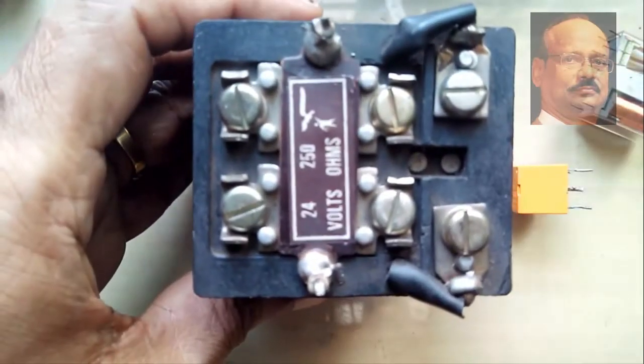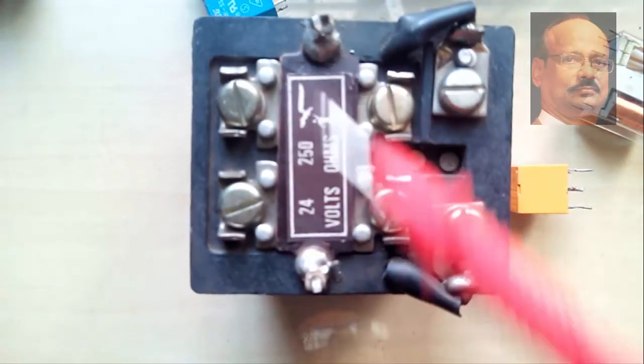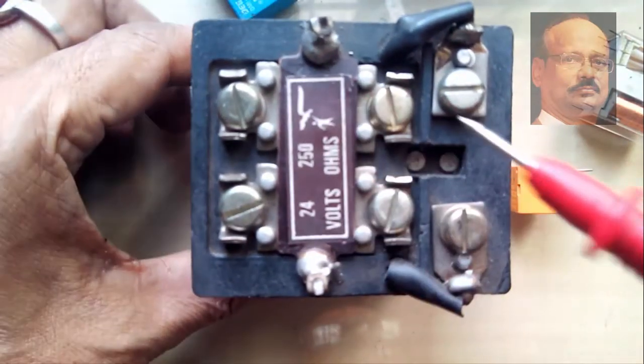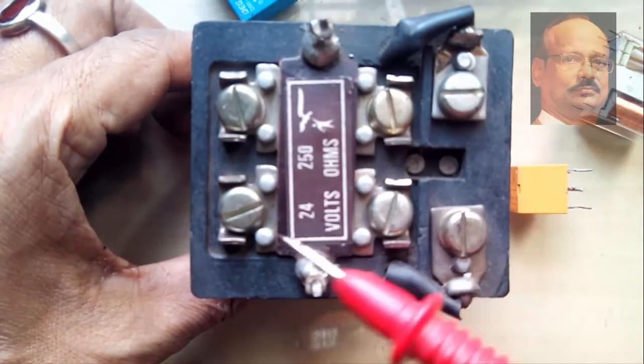And if you see their contact points, their contact points are again same. We have coil points here. These two are coil points here. And this is the common point and NO and NC. This is the common point and NO and NC. This is the 2CO relay.